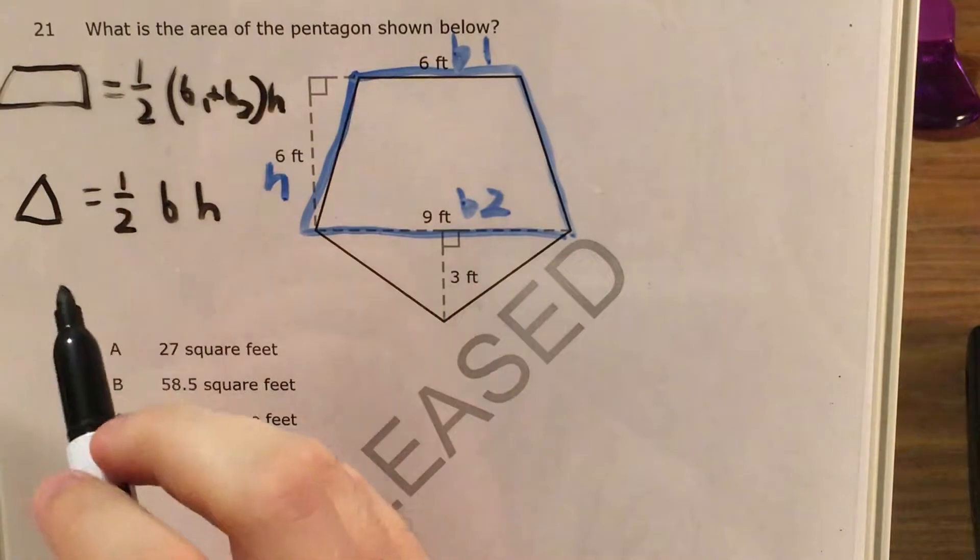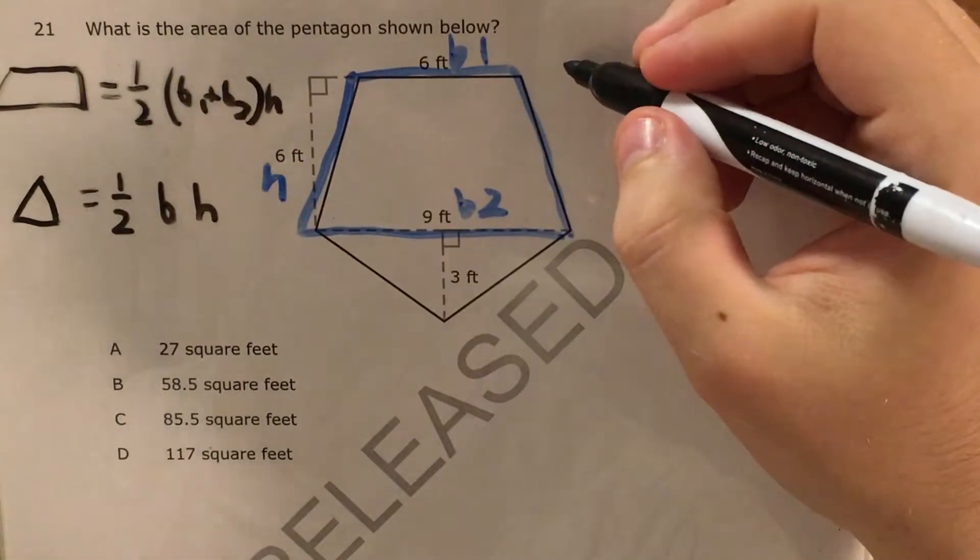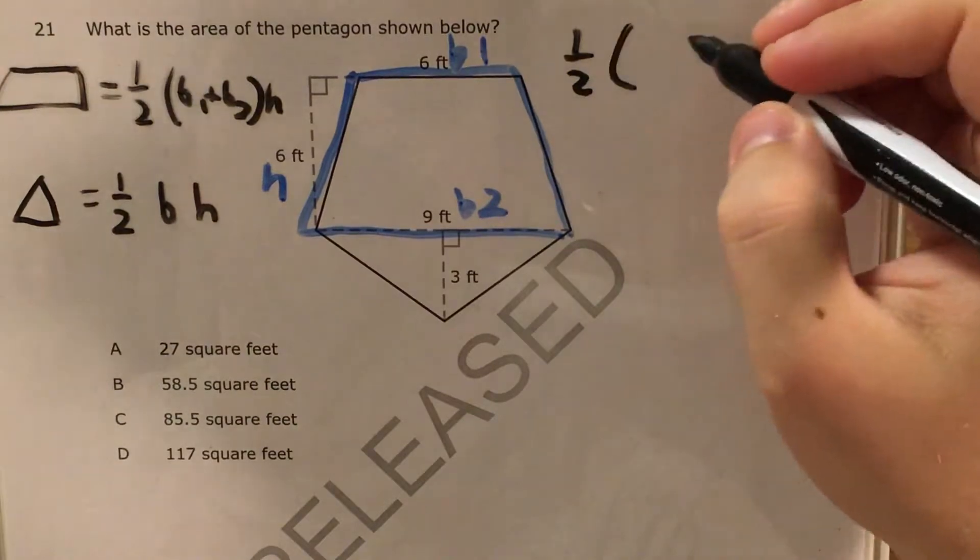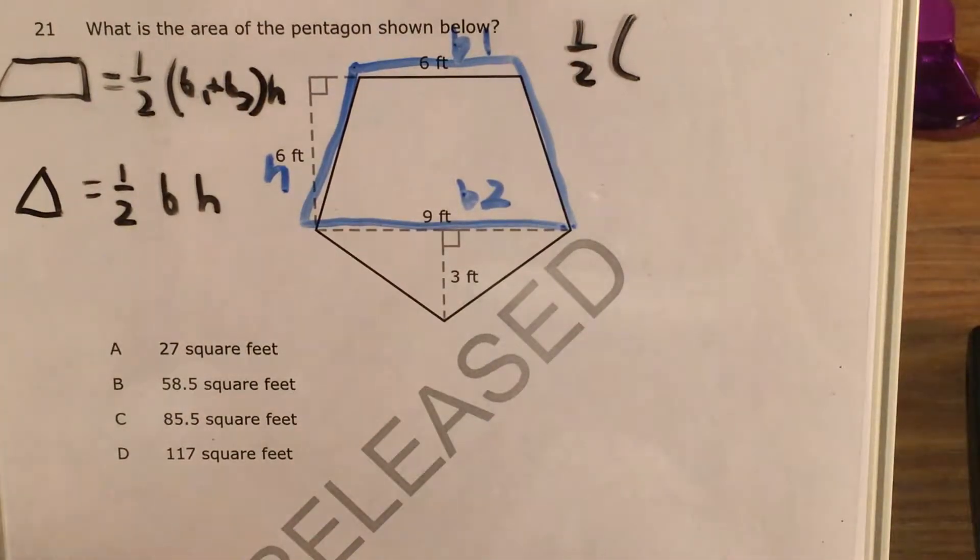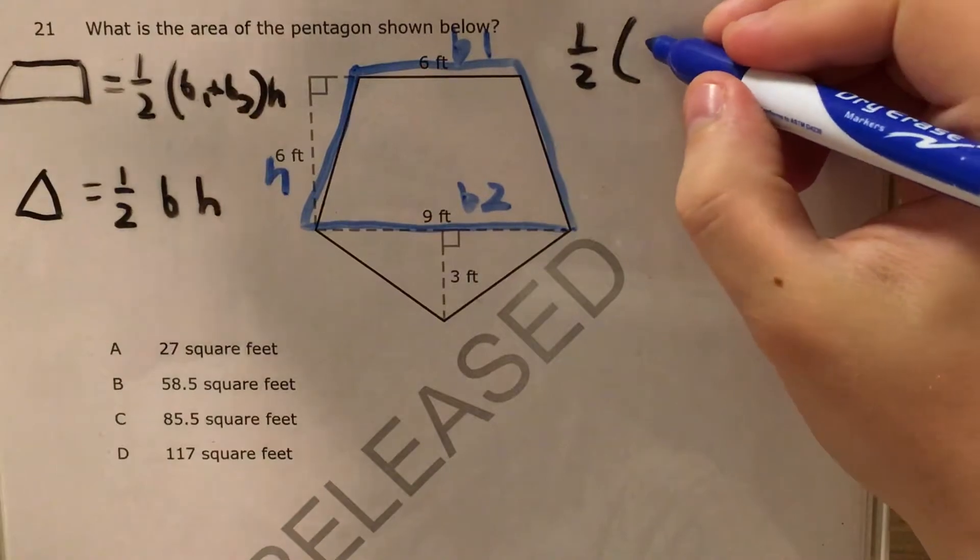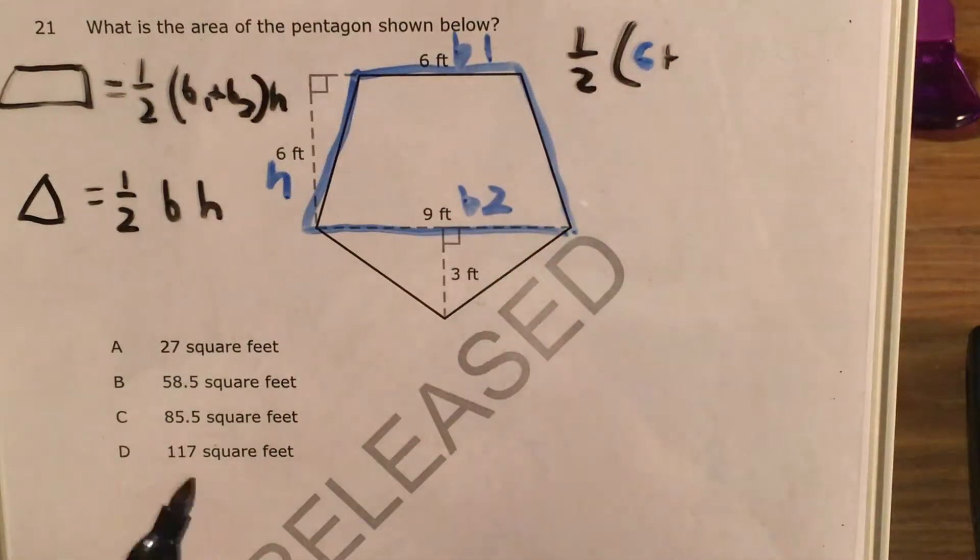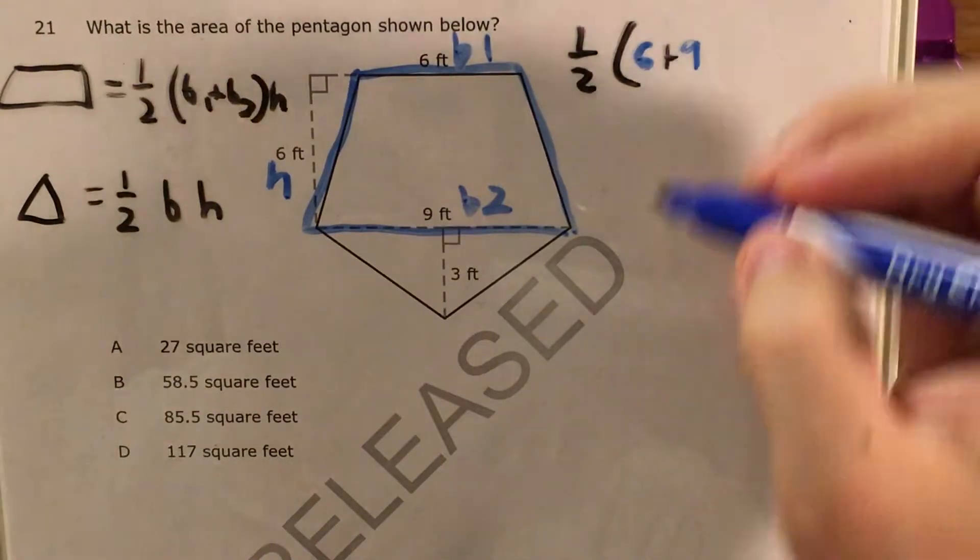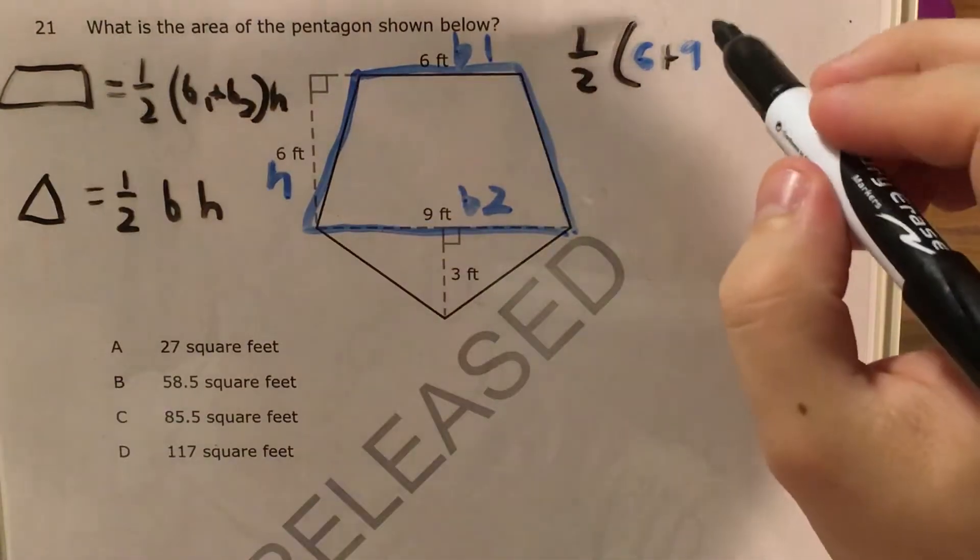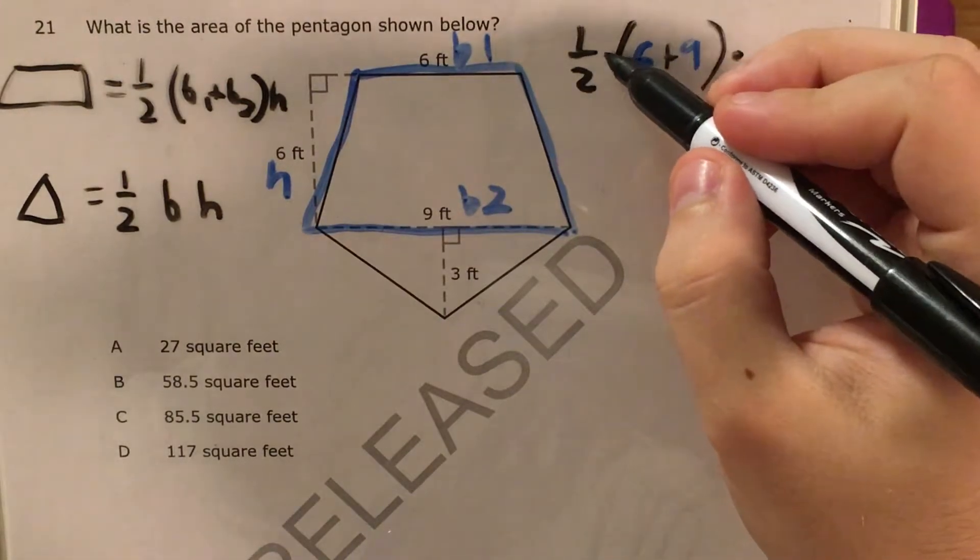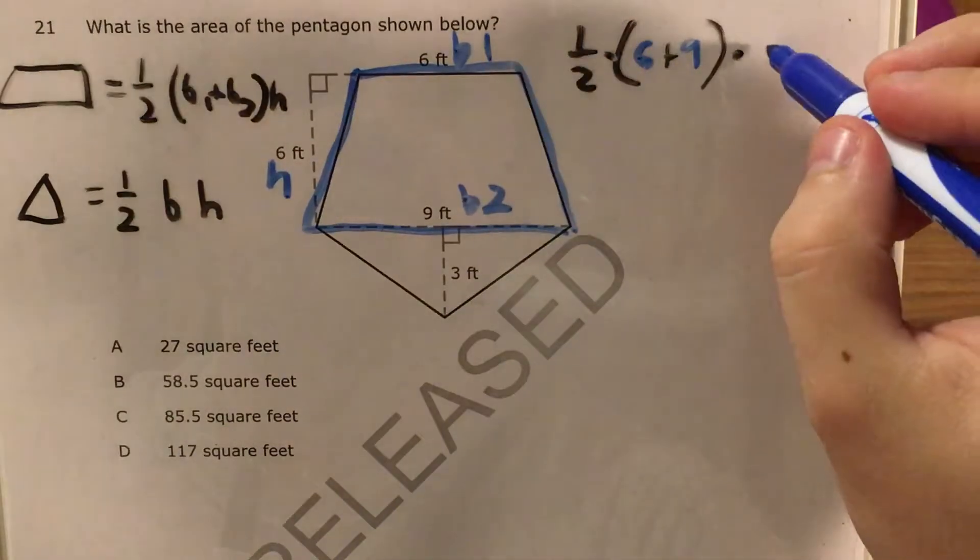So I'm going to go ahead and do exactly that, and I'm going to say that for the area of the trapezoid it's one-half times, instead of base one, base one is six, plus, and instead of base two, base two is nine, times, and I'll put a little times here as well, six.